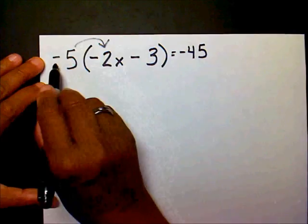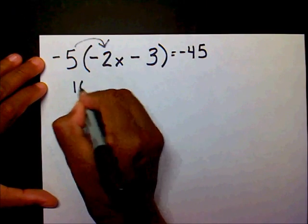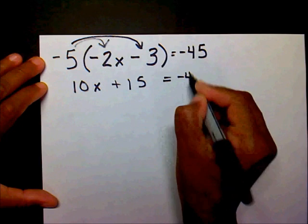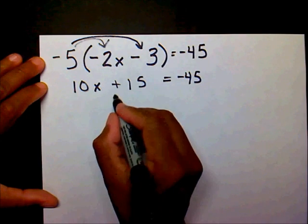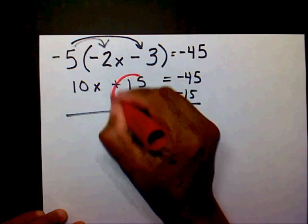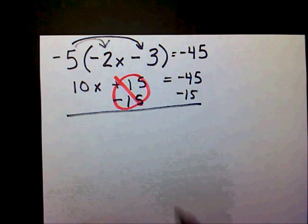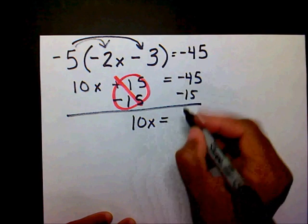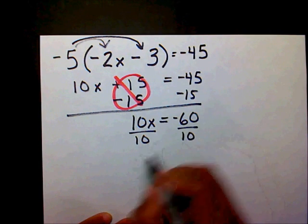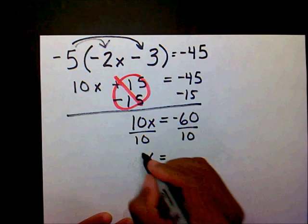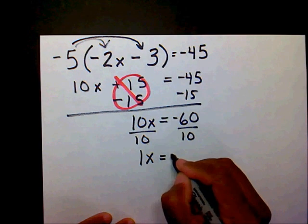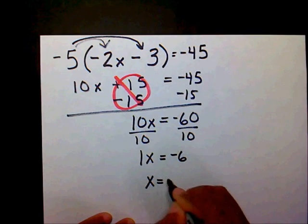I want to apply the distributive property. Negative 5 times negative 2x is 10x, negative 5 times negative 3 is plus 15, equals negative 45. I want to subtract 15 on both sides. My 15s are going to cancel. I'm left with 10x equals negative 60. I want to divide both sides by 10, and so therefore x equals, well 1x, because 10 divided by 10 is 1, x equals negative 60 divided by 10 is negative 6, and we can simplify this more by saying x equals negative 6.